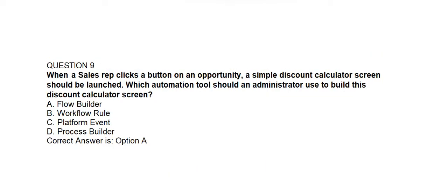Question number nine. When a sales rep clicks a button on an opportunity, a simple discount calculator screen should be launched. Which automation tool should an administrator use to build this discount calculator screen? Option A: Flow Builder. Option B: Workflow Rule. Option C: Platform Event. Option D: Process Builder. Correct answer is Option A: Flow Builder.